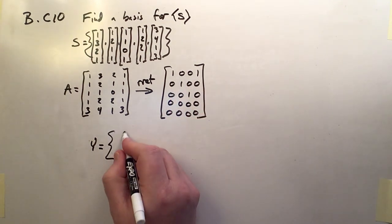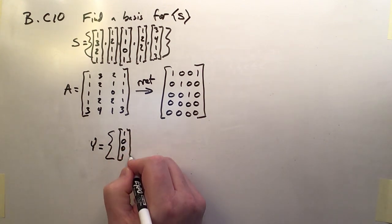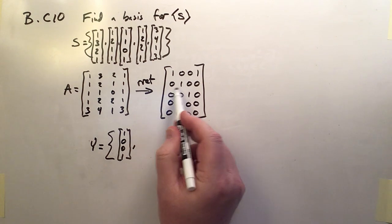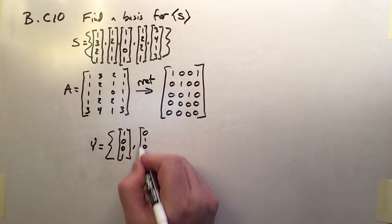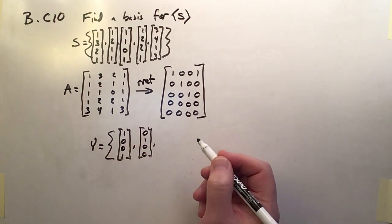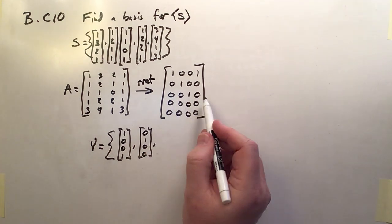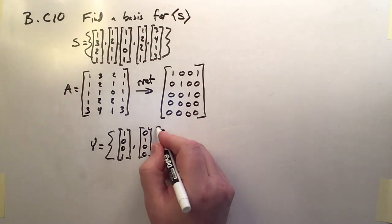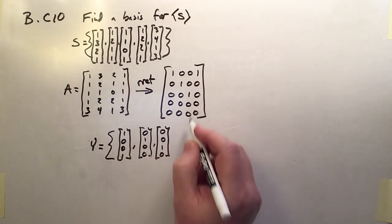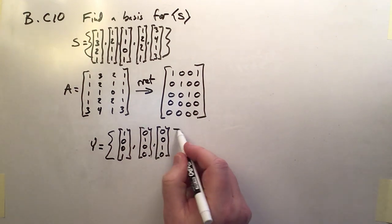So 1, 0, 0, 1, 1, 0, 0. And 0, 0, oh yeah, 0, 0, 1, 0. And that's it. The last two are zeros, so they don't get to play.